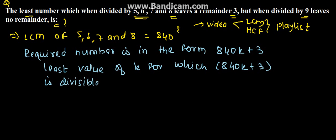Because when it is divisible by 9, it leaves no remainder. So in this case, the least value of K is equal to 2.